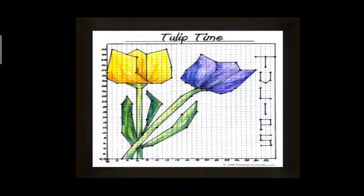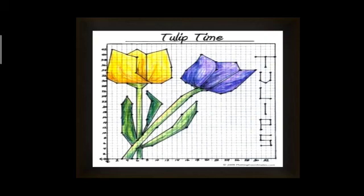Tulips can also be drawn — all the points are marked using dots, and these dots are joined using line segments to get the picture. The picture of a man can also be drawn on the Cartesian plane, making coordinate geometry a most interesting topic for students. They will easily be able to locate a point on the Cartesian plane, and by joining those points, they can get a beautiful picture.